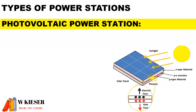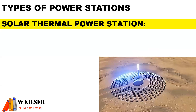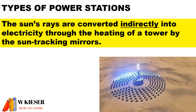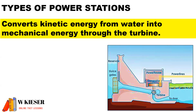For a photovoltaic power station, the sun's rays are converted directly into electricity by releasing electrons from photons. For the solar thermal power station, the sun's rays are converted indirectly into electricity through the heating of a tower by the sun-tracking mirrors. For a hydroelectric power station, it converts kinetic energy from water into mechanical energy through the turbine.